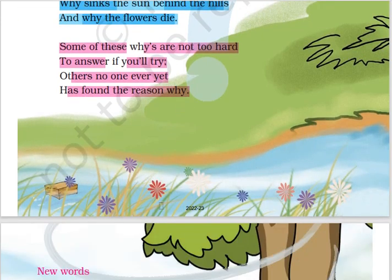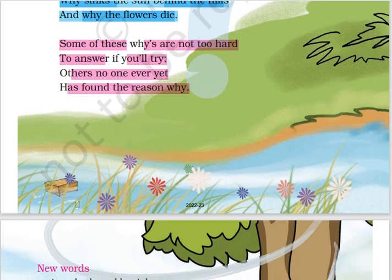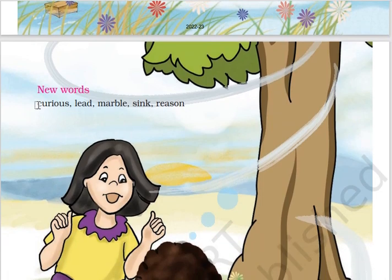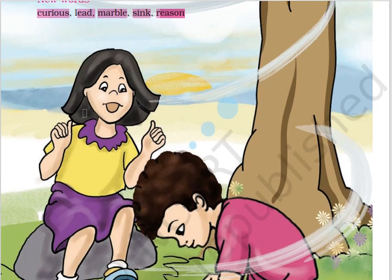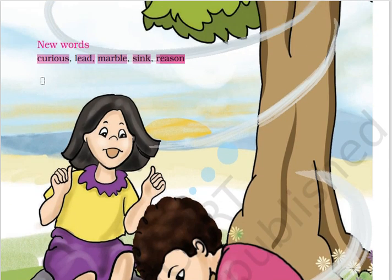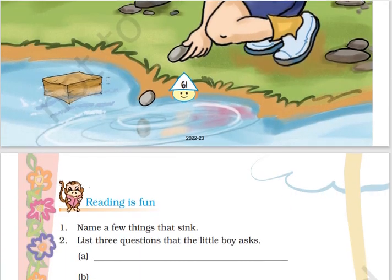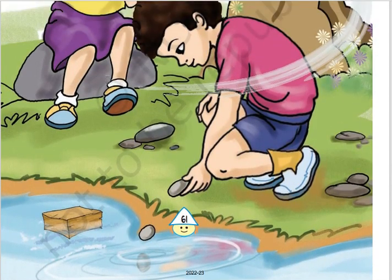So, this is the poem of Class 4 English book Marigold NCERT. And here are some new words: curious, marble, sink, reason. My dear students, if you know the meaning of these new words, you can comment in the comment box, and I will reply whether you have answered correctly or not. We will do the exercise part in the next video.